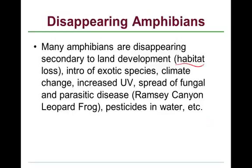The causes of amphibian decline include habitat loss, exotic species, climate change, increased ultraviolet radiation, spread of certain diseases, and pesticides and water pollution. Species that were very common have become rare — for example, the western toad in California and the Yosemite toad, which has disappeared even inside a protected national park.